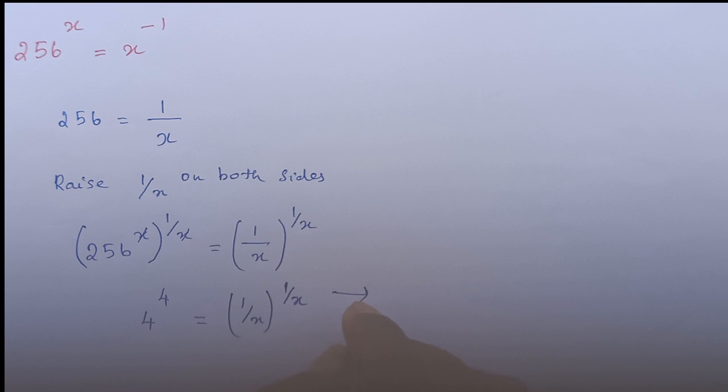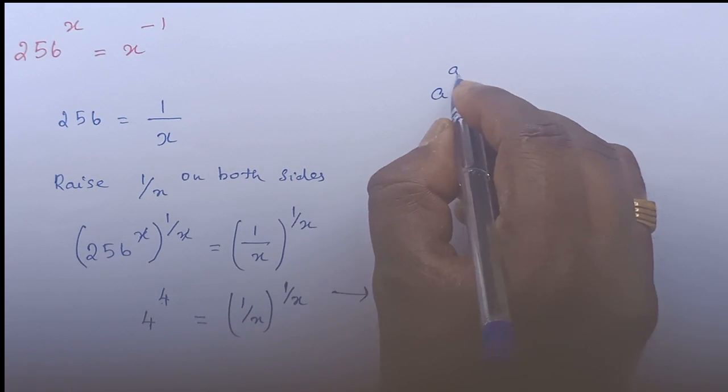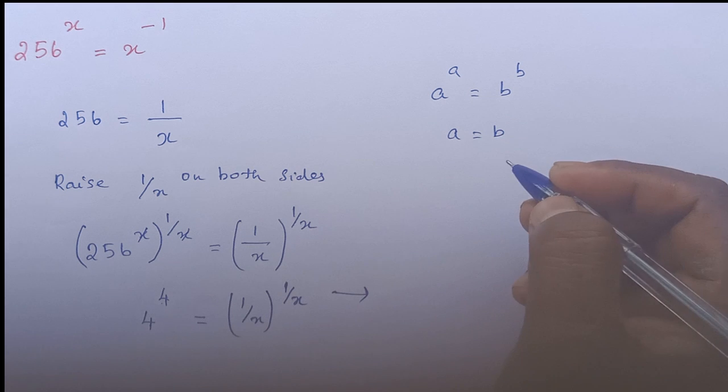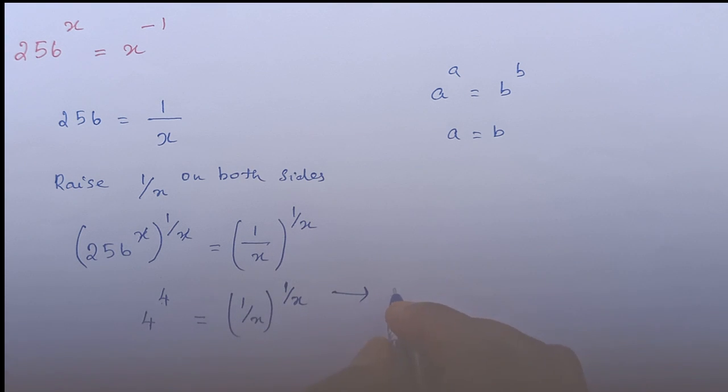This is in the form of a to the power a equals b to the power b, which means a equals b. So by applying this property, 4 equals 1 by x.